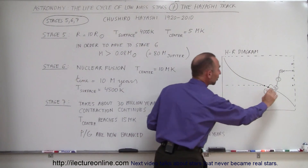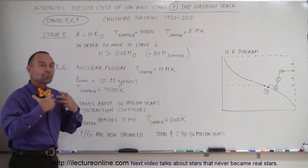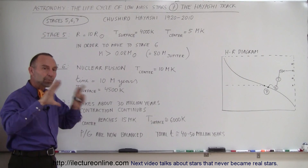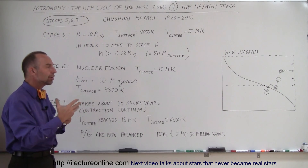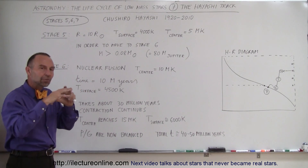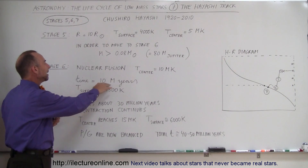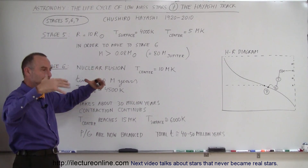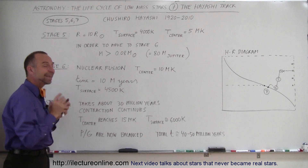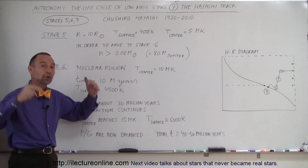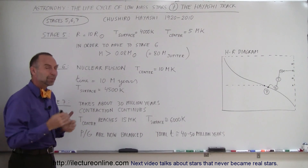By the time we reach stage 6, the size of the star is not much greater than what it is today. Temperatures have reached 10 million degrees, nuclear fusion starts, and a tremendous amount of energy begins to be generated, pushing back against gravity. The contraction begins to slow down. At this point, about 10 million years have passed since the cloud of dust and gas first began to collapse. For a star the size of the Sun, 10 million years is about the right amount of time. Surface temperature is about 4,500 Kelvin and will slowly become warmer over time.